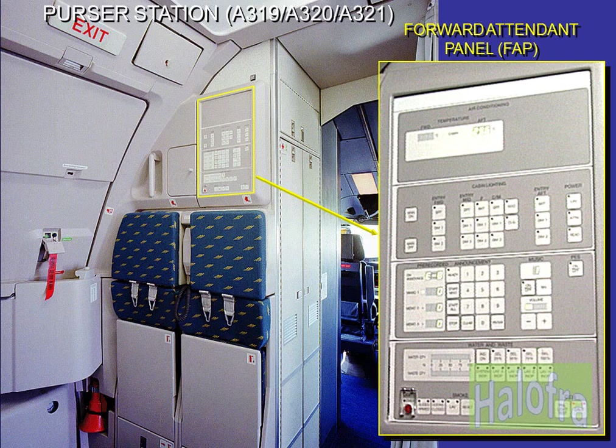The PERSA station is equipped with the forward attendant panel, FAP. It is divided into four parts: the air conditioning panel (optional), the light panel, the audio panel, and the water and miscellaneous panel.